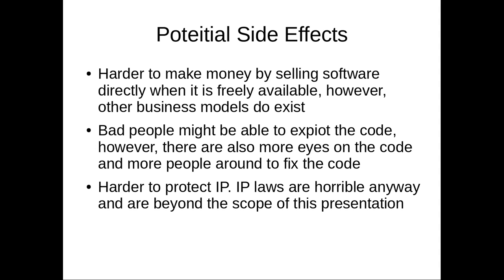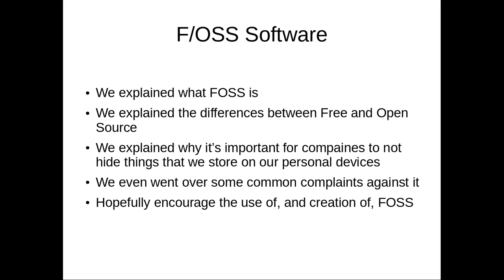A lot of people also complain that it's harder to protect intellectual property. Intellectual property laws are problematic anyway and are beyond the scope of this presentation, but suffice to say the biggest issue is that trade secrets hidden inside code could be released to competitors. Maybe we need to change IP laws to be more like medicine laws, where you get a period to recoup your investment and then it opens up — but that's beyond the scope of this presentation. So what exactly did we go over? We explained what FOSS is, the differences between free and open source software, why it's important for companies not to hide things on our personal devices, and we went over some common complaints. Hopefully this presentation will encourage the use and creation of FOSS software and tools. And that is it — enjoy!